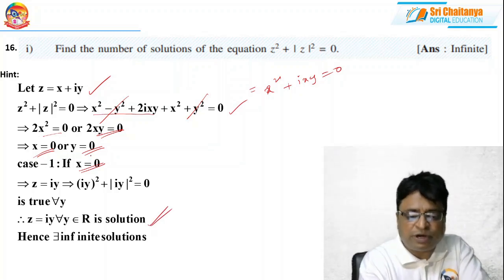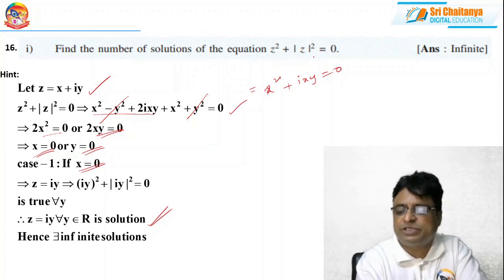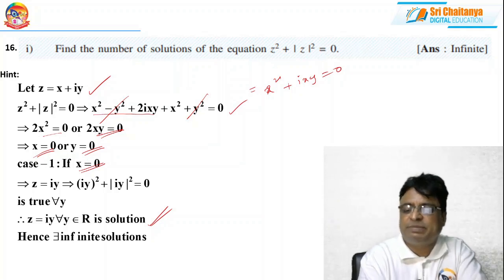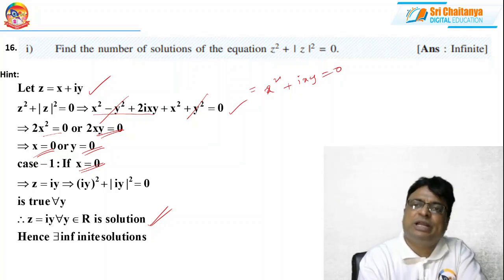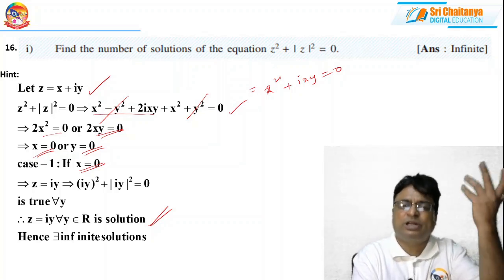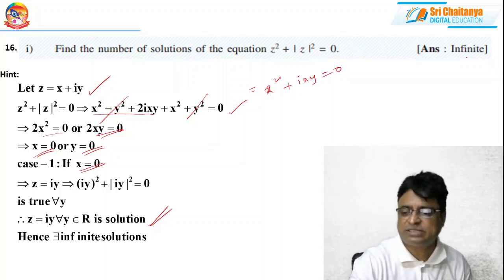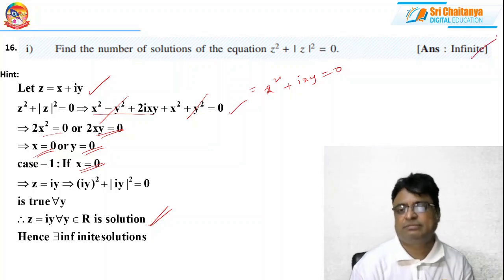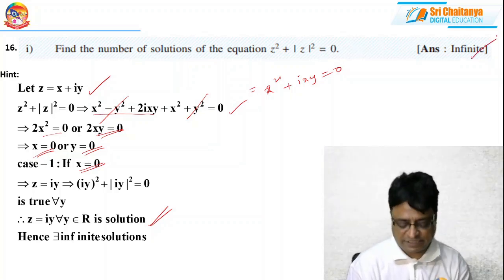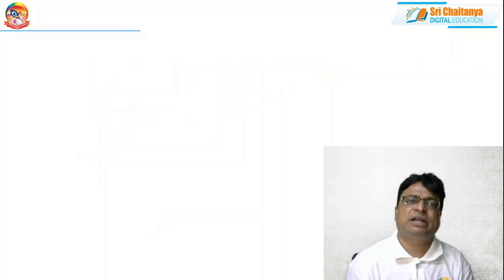Case 2: suppose y = 0, then z = x, and substituting gives x² + x² = 0, so x = 0. That is also a solution. Totally, the equation has infinitely many solutions. That is the answer.